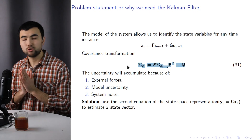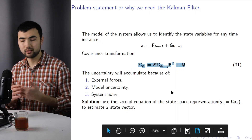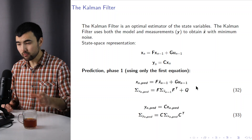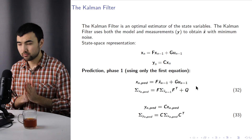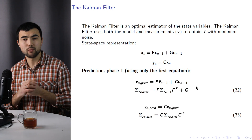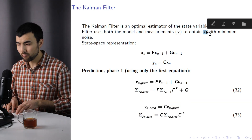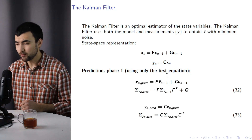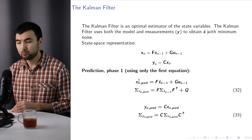The solution to this problem is to use the second equation of the state space representation, yn equals C·xn, to estimate x, the state vector. In mathematical terms, the Kalman filter is an optimal estimator of the state variables. The Kalman filter uses both the model and the measurements y to obtain x-hat with minimum noise. We use the x-hat-hat symbol to denote the optimal value of the state vector. The first step in the Kalman filter — called the prediction step — uses the optimal value of x from the last iteration and the model equations to predict the state vector.